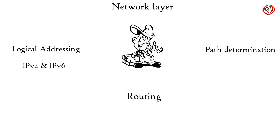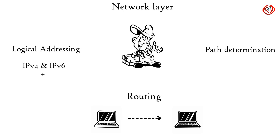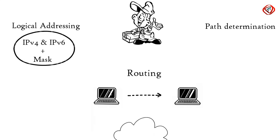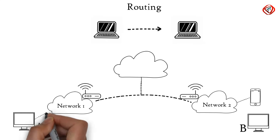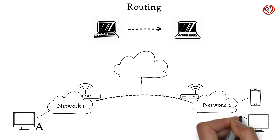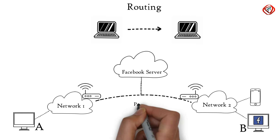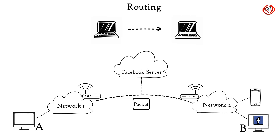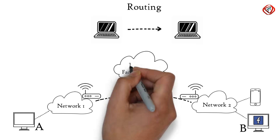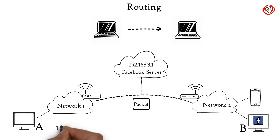Routing is a method of moving a data packet from source to destination, and it is based on the logical address format of IPv4 or IPv6. Suppose computer A is connected to network 1 and computer B is connected to network 2. From computer B, we have requested to access Facebook.com, and now there is a reply from the Facebook server for computer B in the form of a packet. This packet needs to be delivered to computer B only. Since each device in a network has a unique IP address, both computers will have a unique IP address as well.